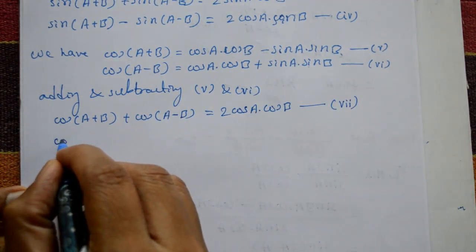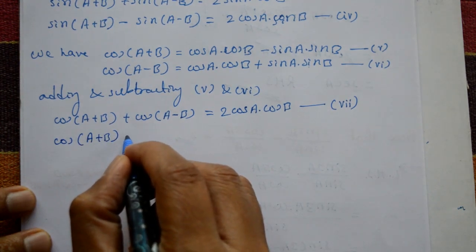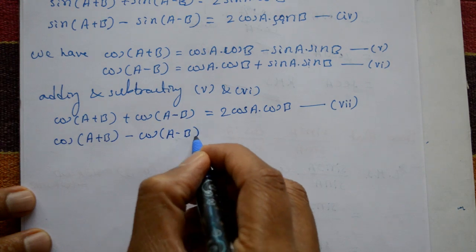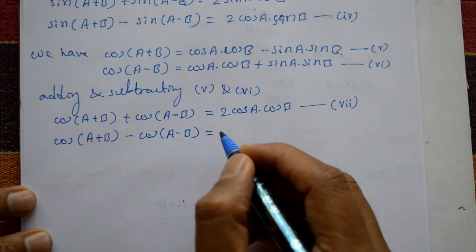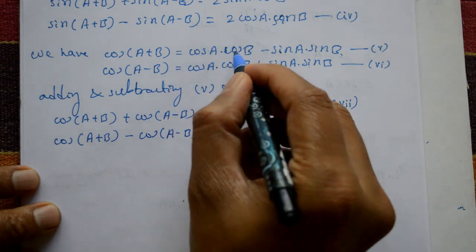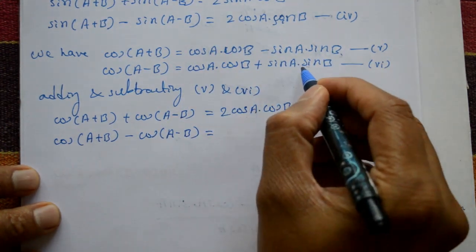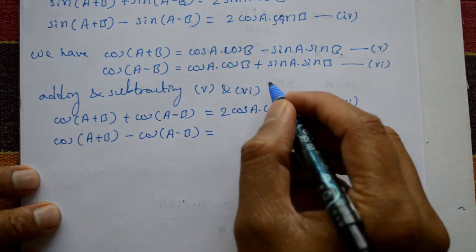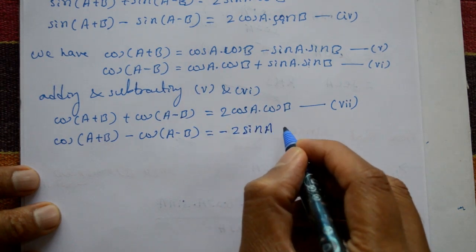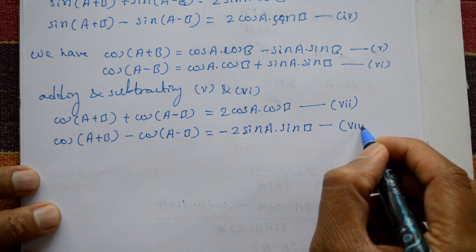Subtracting equations five and six: cos(a + b) − cos(a − b). On the right-hand side, the plus terms cancel and we are left with minus two times sin a · sin b. This is equation number eight.